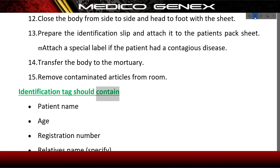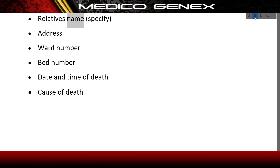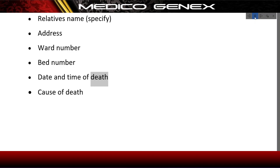The identification tag should contain: patient name, age, registration number, relative's name and relationship, address, ward number, bed number, date and time of death, and cause of death.